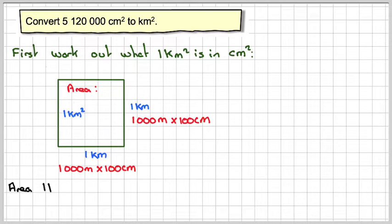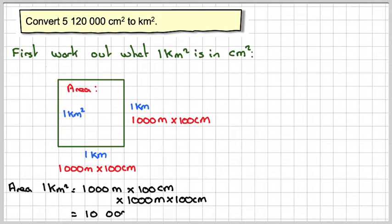So 1 kilometer squared would be 1,000 times 100 times 1,000 times 100, which is one with 10 zeros on. So that would be 10,000,000,000 centimeters squared. So 1 kilometer squared is actually 10,000,000,000 centimeters squared.